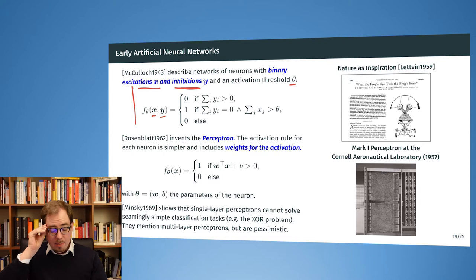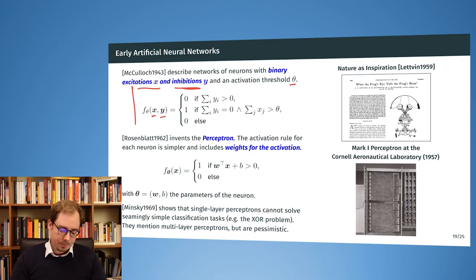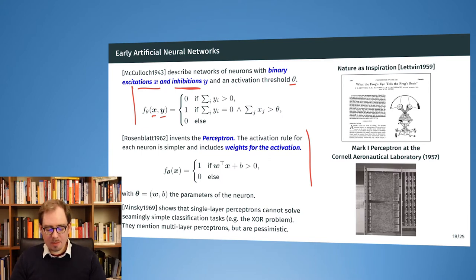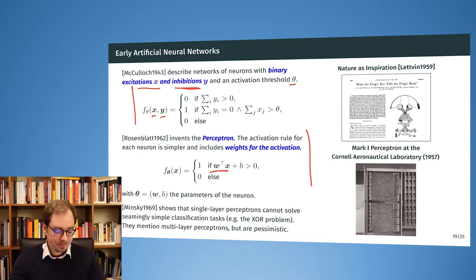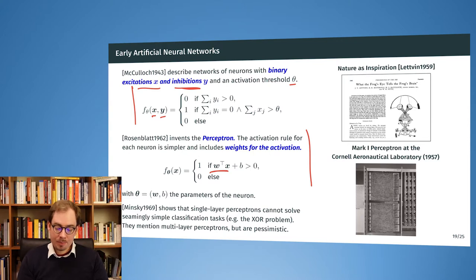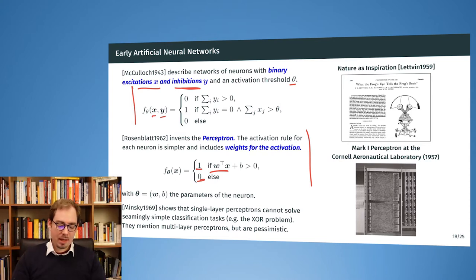For McCulloch and Pitts, only binary signals were considered — inputs x and y were exclusively zero or one. About fifteen years later, people invented the perceptron, which takes real numbers as input and builds a weighted sum with a weight vector w. Again, if the weighted sum is larger than some threshold, the neuron activates. The input can be a real number, but the output remains binary — there is a step, and the activation function is discrete, either zero or one.